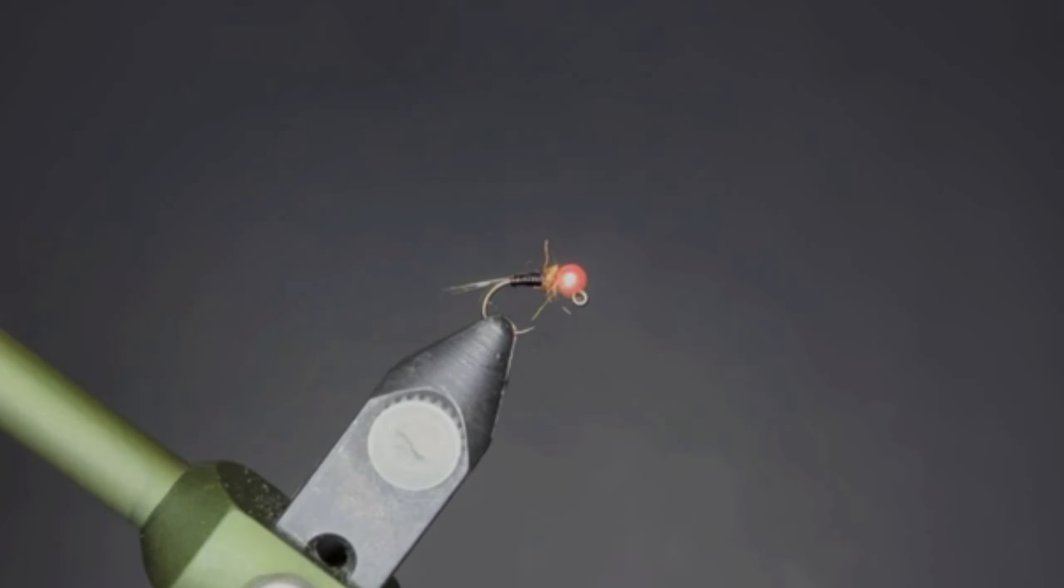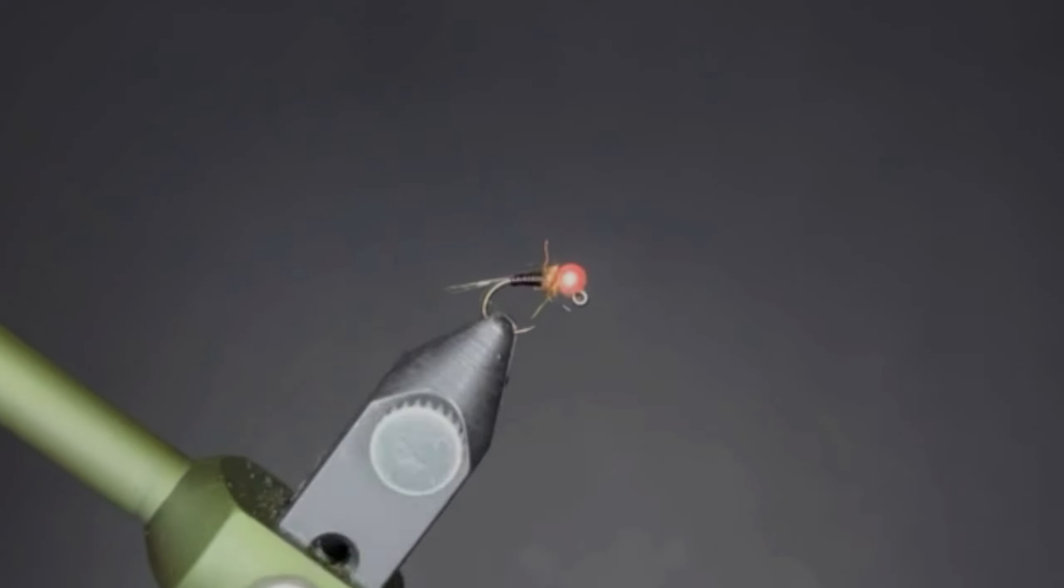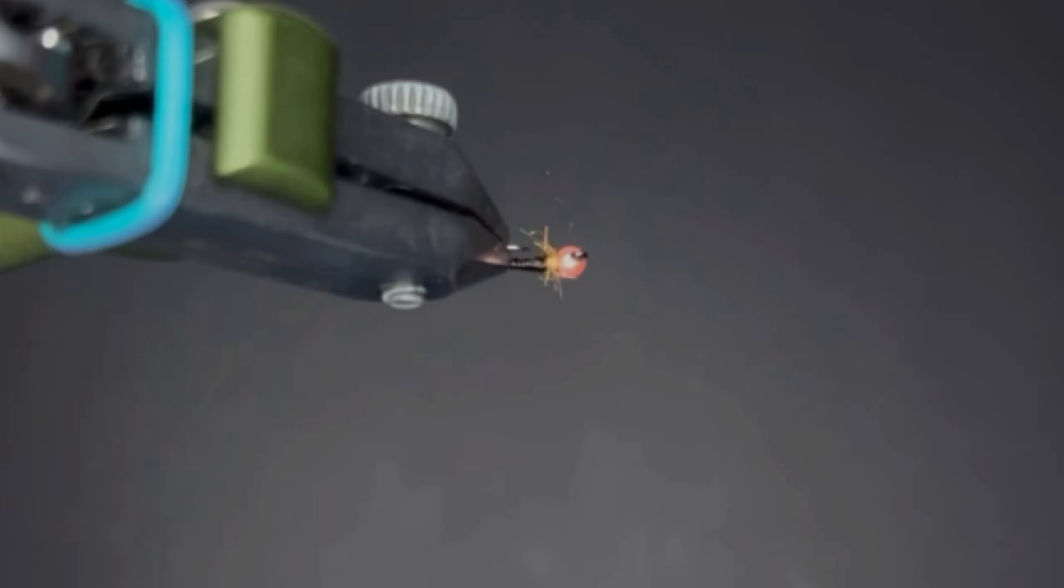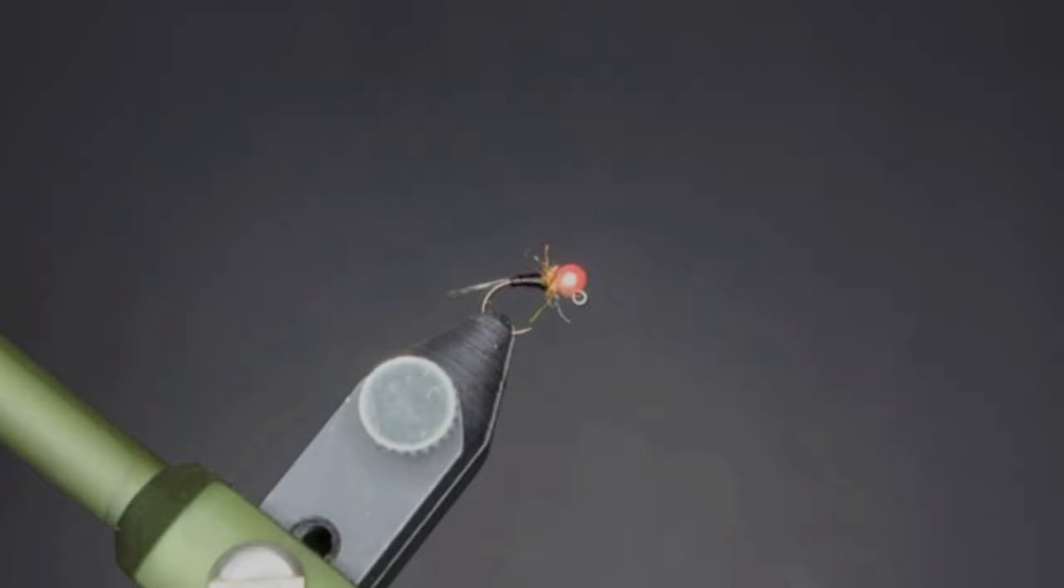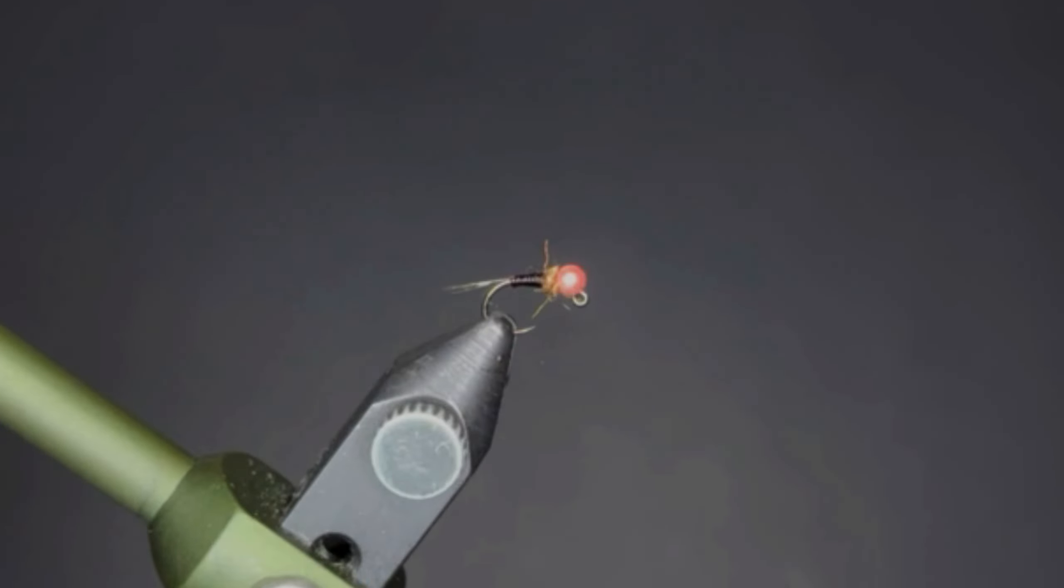You can do black, golden stone, red - there's all kinds of different color variations. Pick some out and figure out what works for you. This has been a really good pattern for me lately, I've caught quite a few fish on it, so it's been really fun.